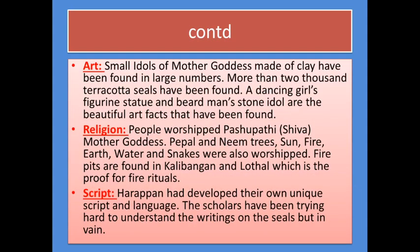Let us go to art. Small idols of mother goddess made of clay have been found in large numbers. More than 2,000 terracotta seals have been found. A dancing girl's figurine statue and a bearded man's stone idol are the beautiful artifacts that have been found in this civilization.